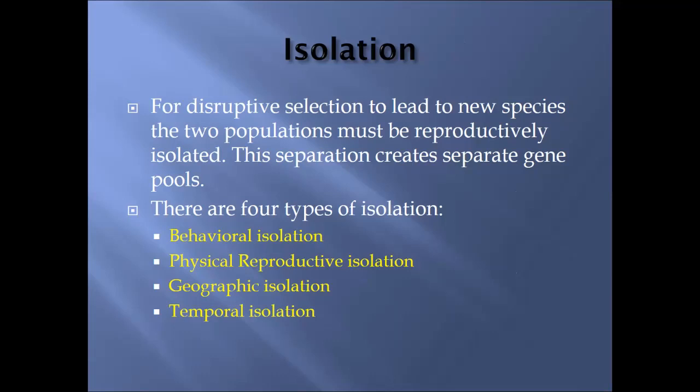There are four types of isolation. First, behavioral isolation, where the actions and decisions animals make in terms of behavior impact their ability to interbreed. Second, physical reproductive isolation, where actual body sizes or physical structure prevents interbreeding. Third, geographic isolation, where location physically prevents interaction with the other gene pool. And lastly, temporal isolation — timing — meaning when individuals come into breeding season and whether they are ready to breed at the same time.